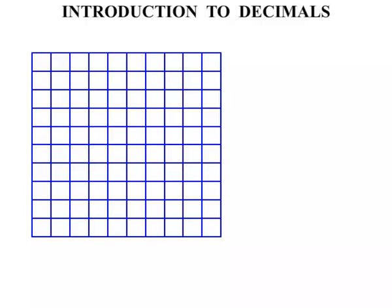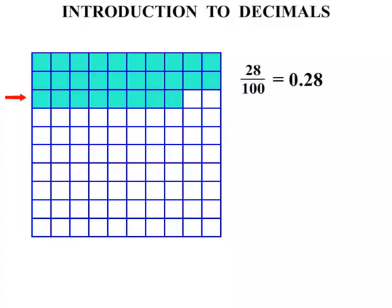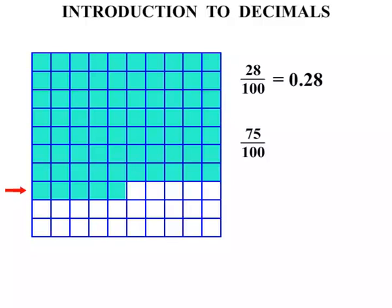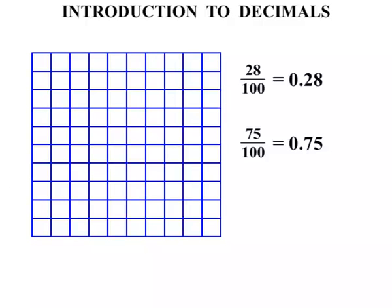So that was tenths. What about if we break it up into hundredths? How many are shaded there? Let's count by tens: ten, twenty, and then there's another eight — so we have 28 hundredths. As a decimal, we write that as 0.28. What about this one? Counting by tens: ten, twenty, thirty, forty, fifty, sixty, seventy, and five more is 75. So 75 hundredths — as a decimal, 0.75. This time there's only six, so it's six hundredths, and as a decimal, 0.06.